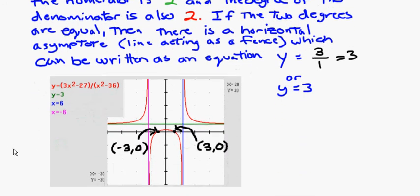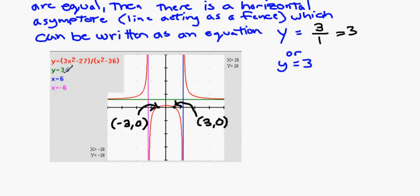So graphing the actual function, here's what it looks like. So 3x squared minus 27 over x squared minus 36. And you can see here, here's our y equals 3. So there's our horizontal asymptote. It's a line in green. Our vertical asymptotes are at 6 and negative 6. That's the blue and the purple line. And then our zeros are at 3 and negative 3. So this is the actual graph of this particular function. And those are the critical points or critical junctures of the graph.